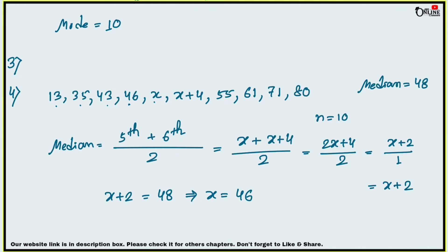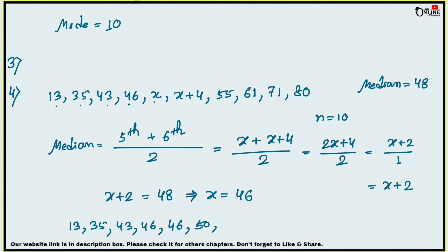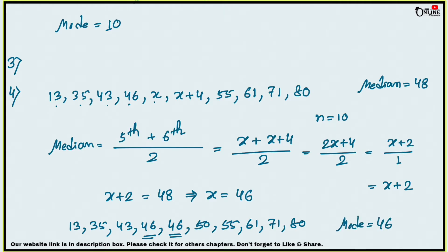Now find the mode. Substituting x = 46, the numbers become: 13, 35, 43, 46, 46, 50, 55, 61, 71, 80. The number 46 occurs maximum times, so mode = 46.